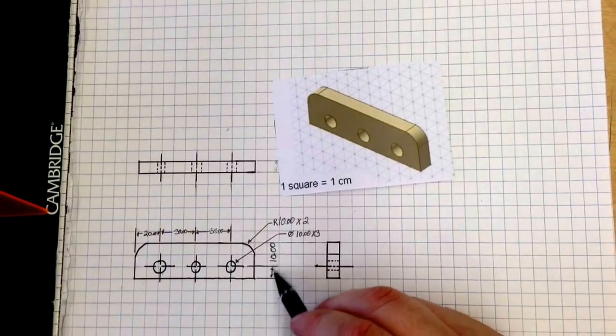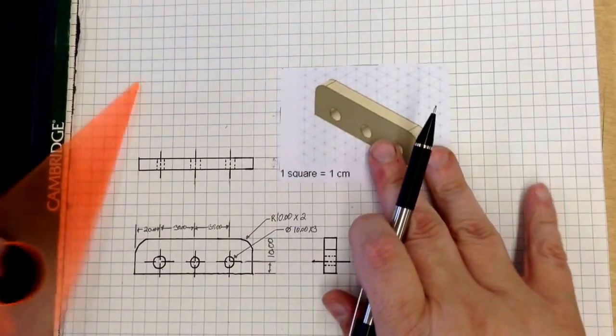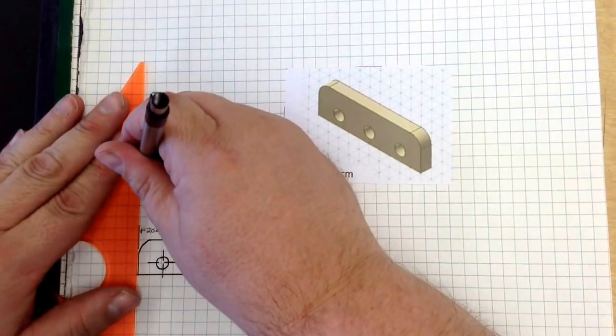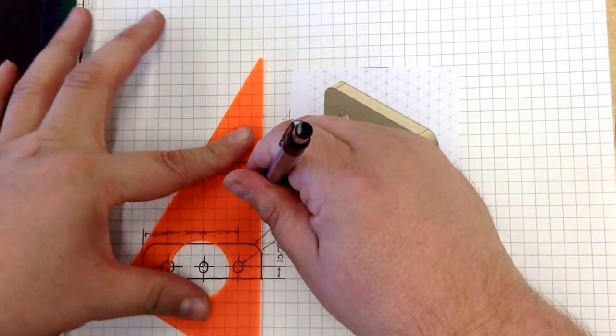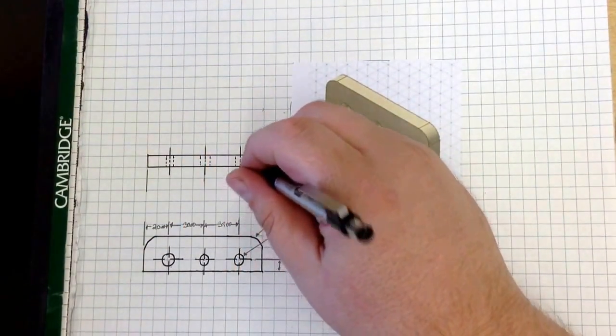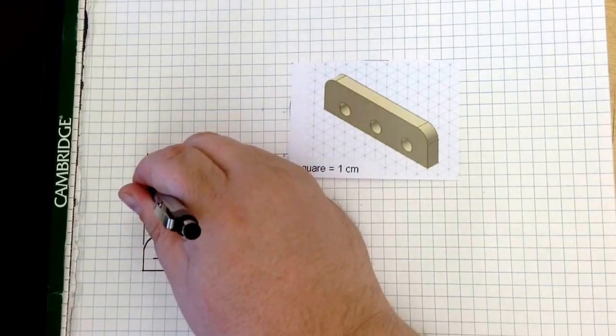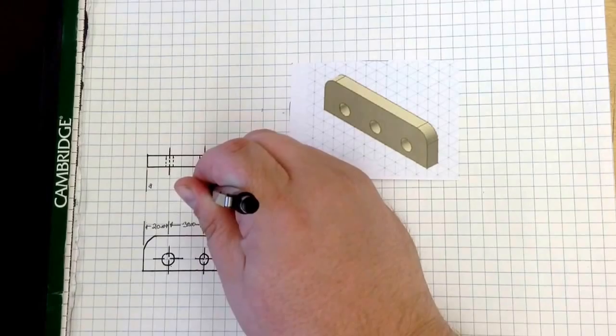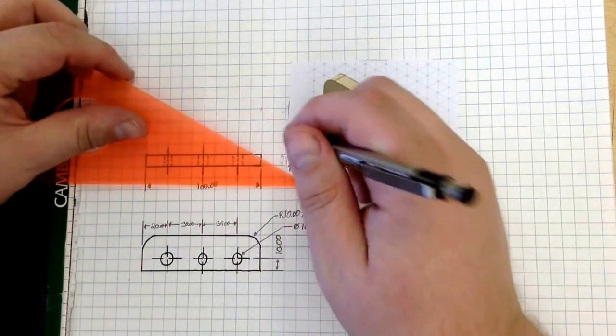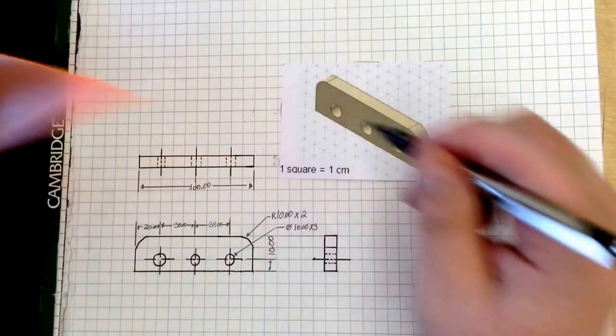We know where they're located up, we know their diameter, and we know how far they are across. Now we need to locate an actual length measurement of the entire object, which we'll do right here. And it is 10 centimeters, or 100 millimeters, long.